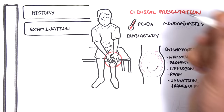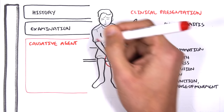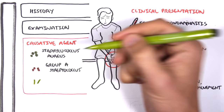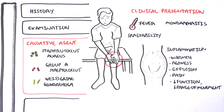The person presenting with an inflamed joint requires a thorough history and examination. For septic arthritis, the main causative agents include Staphylococcus aureus, Group A Streptococcus, and Neisseria gonorrhea, which is a sexually transmitted bacteria.